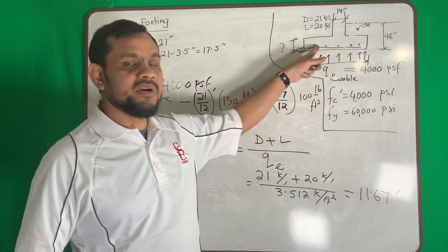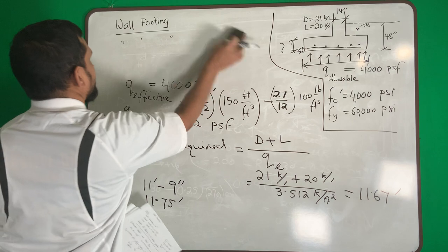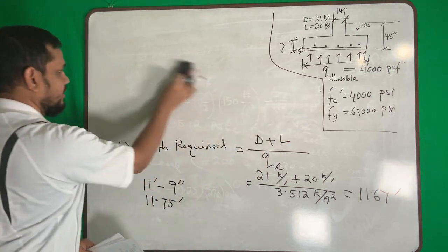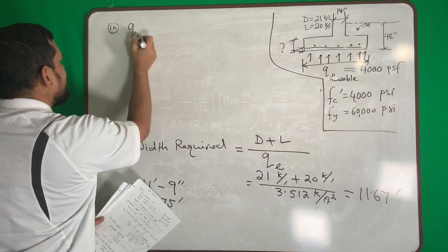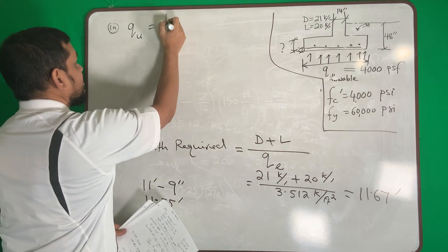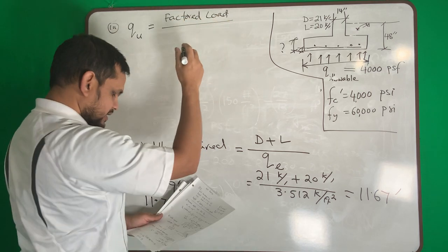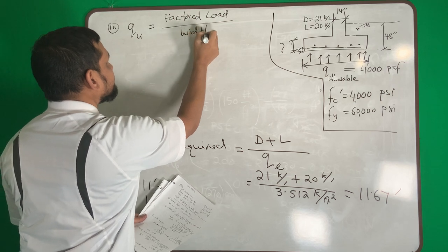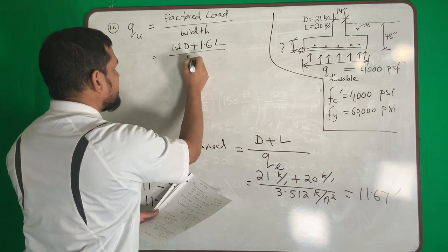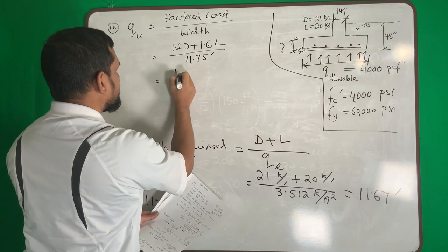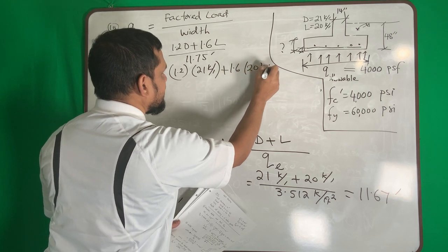When designing reinforcement, we use factored loads. Step three: calculate the factored soil pressure q_u = factored load / width = (1.2D + 1.6L) / 11.75 ft = (1.2 × 21 + 1.6 × 20) / 11.75. We use kip per feet rather than kip per square feet because we are taking a one-foot strip of the wall footing for design.